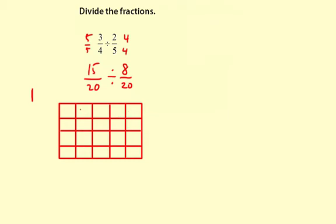Now 15 20ths. Let's see, probably the easiest way is to do these three rows here. So the question is, how many times does 2 5ths or 8 20ths, now with a common denominator, go into 15 20ths? So all I need to do is count these 15 boxes by 8 and see what we get.